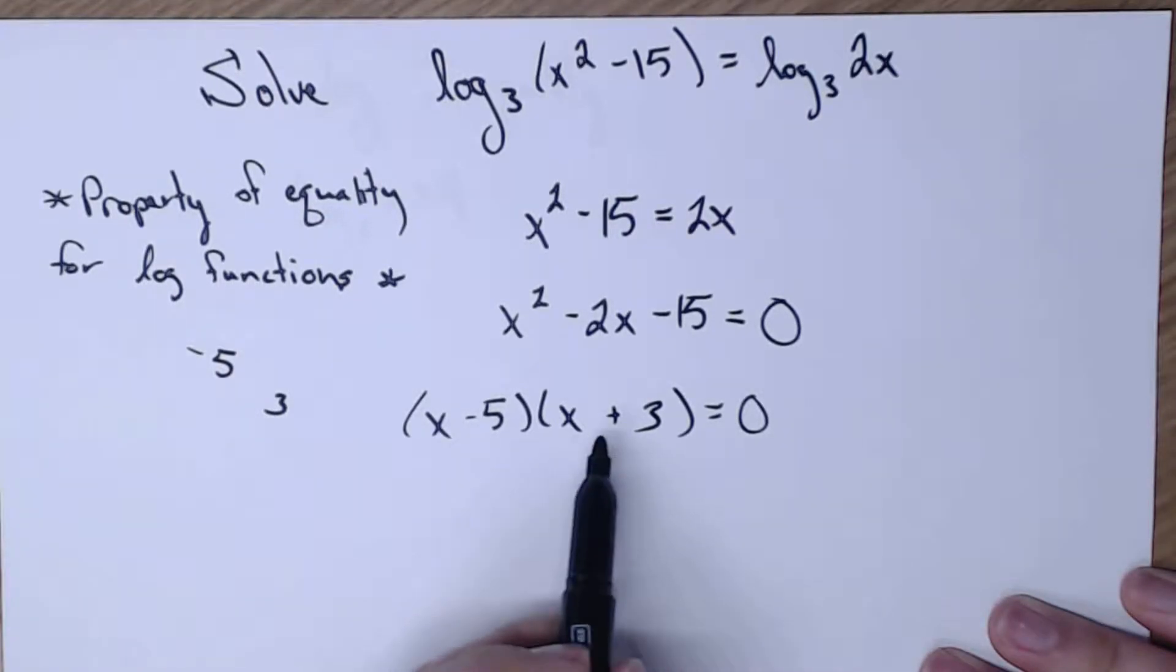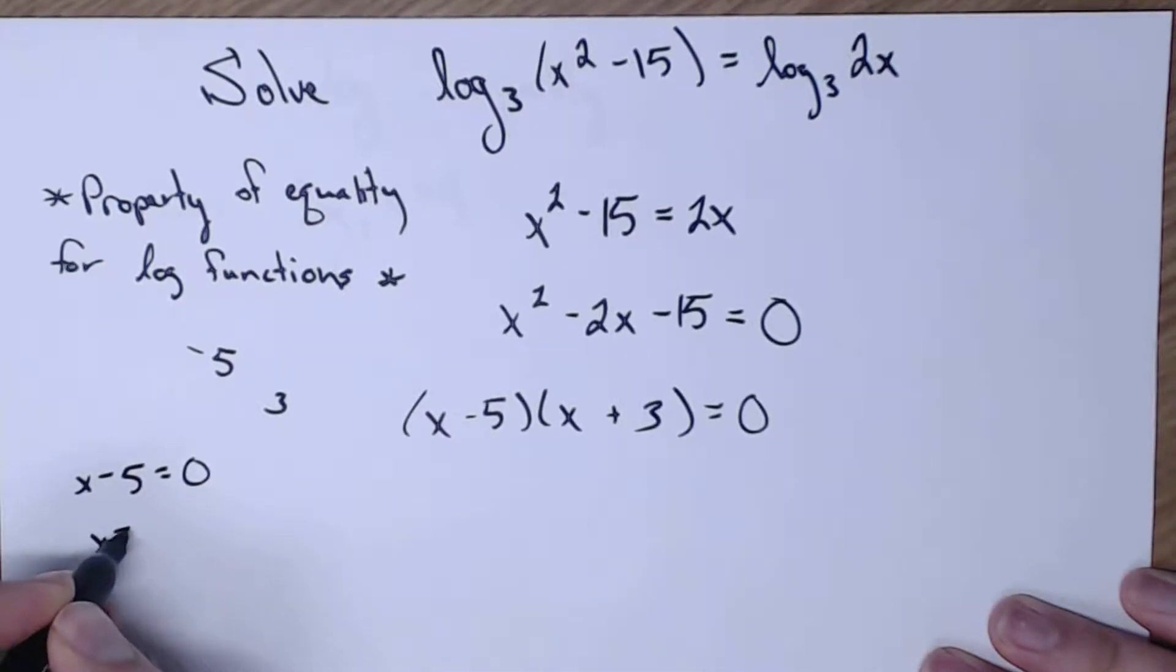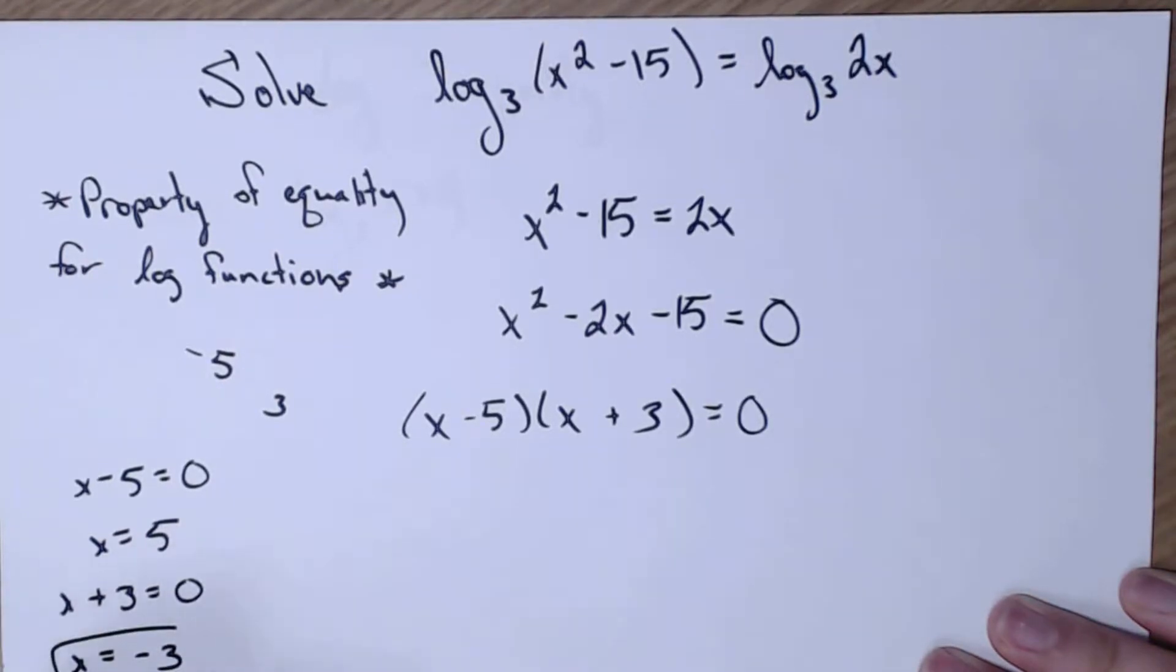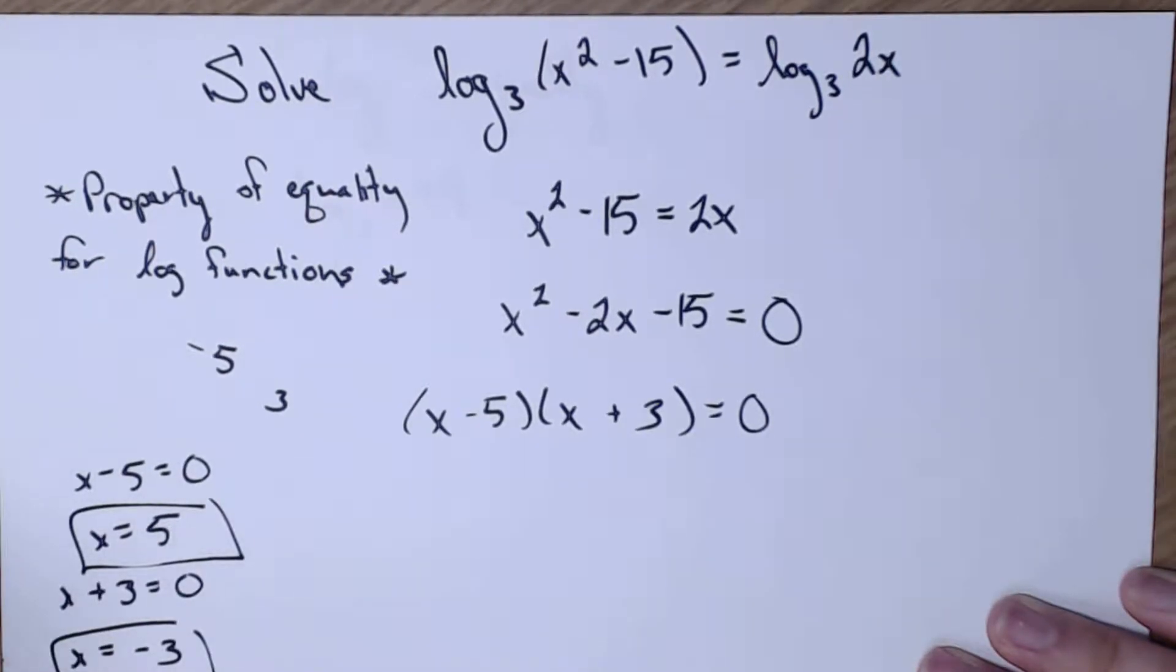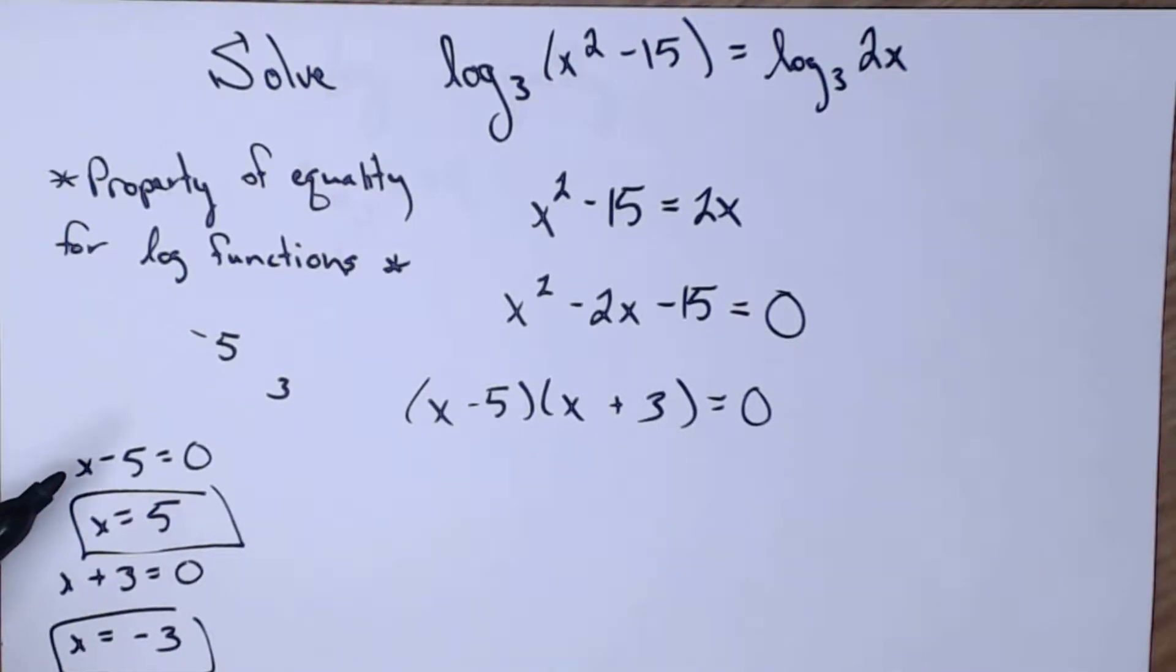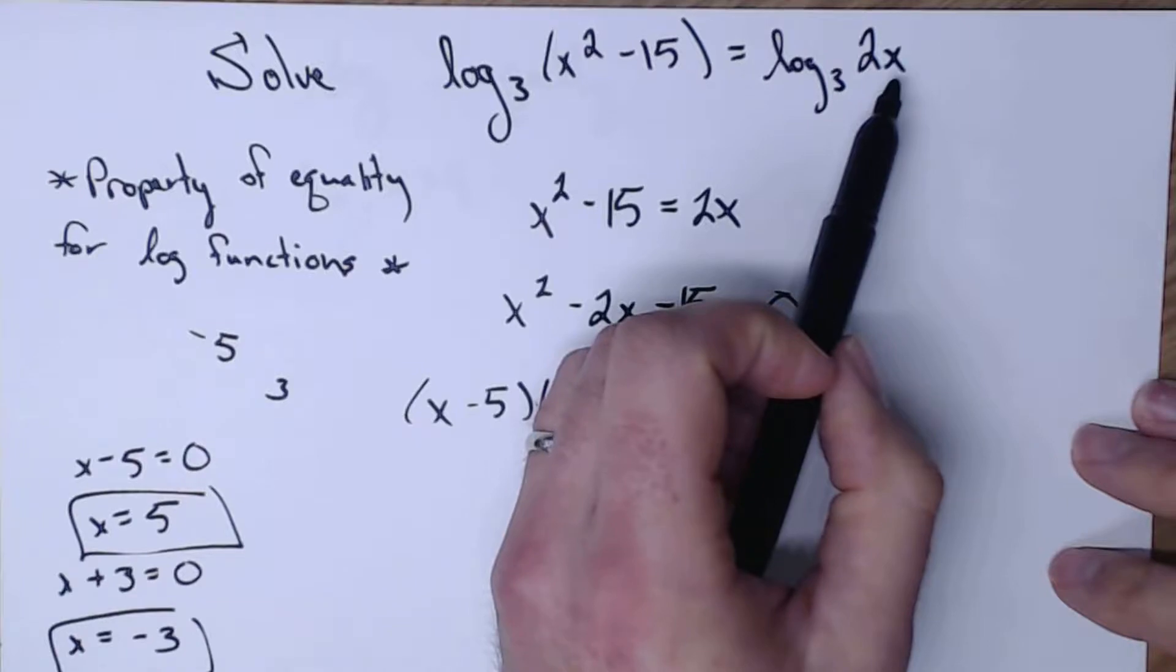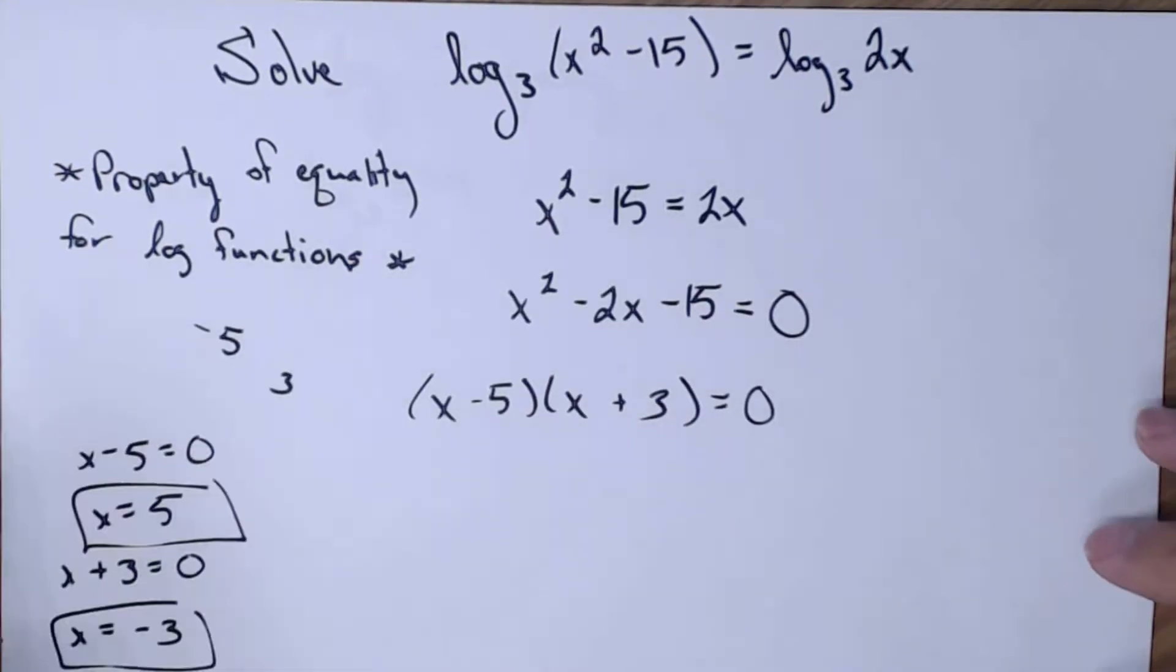I set each set of parentheses equal to 0 to figure out what x is. So I have x minus 5 equals 0. Well, that's x is 5. Then I have x plus 3 equals 0. And x equals negative 3. So I have two answers. But just like we've had happen before, we have to check for extraneous solutions. And we also have to keep in mind that the domain for logs, or the stuff I'm allowed to plug into a log, has to be a positive number. It can't be 0 or less than 0.